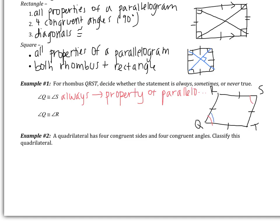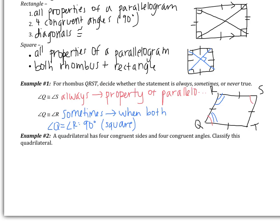The next statement: is angle Q congruent to angle R — always, sometimes, or never? In this case, these are consecutive angles. We know that consecutive angles are supplementary — that's a property of parallelograms — but we don't know that they're congruent. It is possible, so this is sometimes true. The case when they are both congruent is when they are both 90 degrees. If we have four congruent sides and four right angles, this becomes a square. So when our rhombus is a square, the consecutive angles will be right angles and will be congruent.